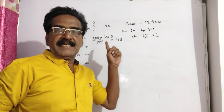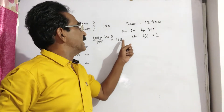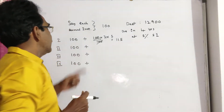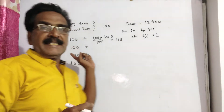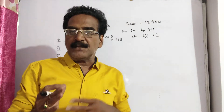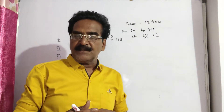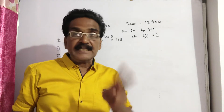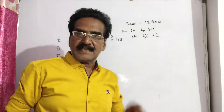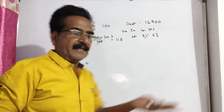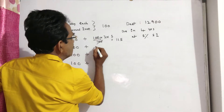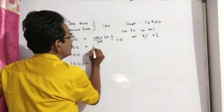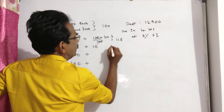So for 3 years we are getting interest of Rs 15. For 2 years, see the second installment — the installment you pay at the end of the second year will fetch interest for only 2 years, that is the 3rd year and 4th year. So 2 years interest is 10 rupees.